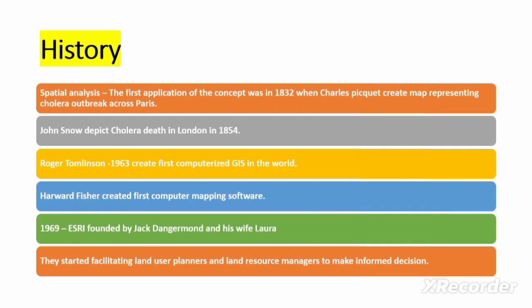Now let us see the history. I also have a video about GIS components — please check that video if you haven't seen it. When we talk about the history of GIS, in 1832 Charles Picquet represented a map of cholera's outbreak across Paris. This was the first spatial analysis. Then John Snow represented cholera's character spatially in London in 1854.